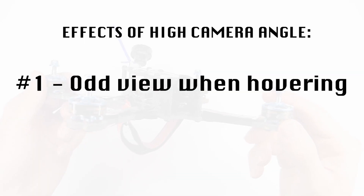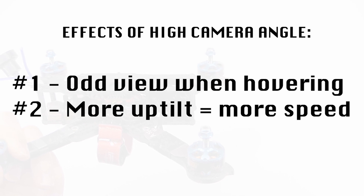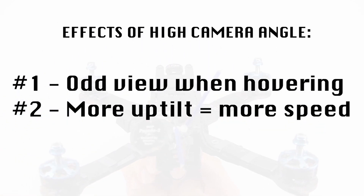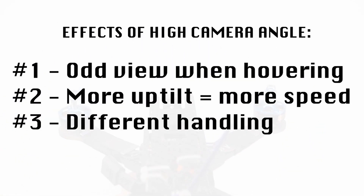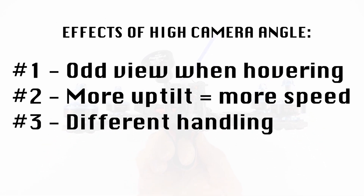Those three effects are: first, it's going to look weird when you're hovering because you'll be looking upwards. Second, the more uptilt you have, the faster you're going to fly — you'll tend to fly faster normally if you have more uptilt. And lastly, if you have a lot of uptilt, your controls are going to be different — you're going to have more roll instead of more yaw. I'm going to demonstrate all of those things right now.